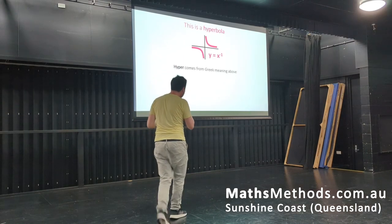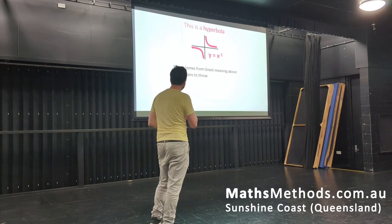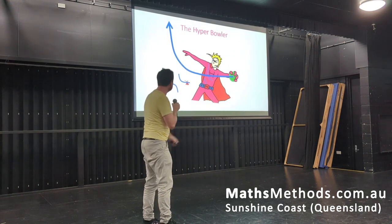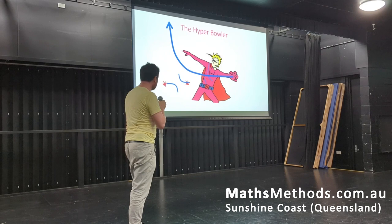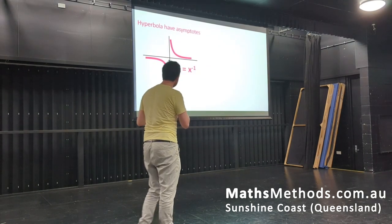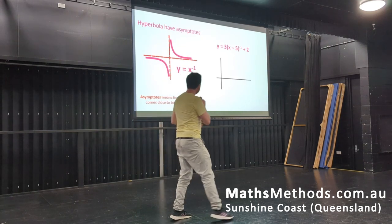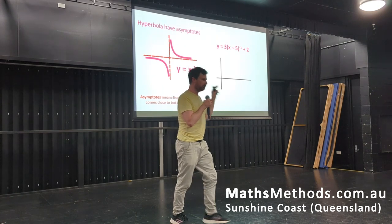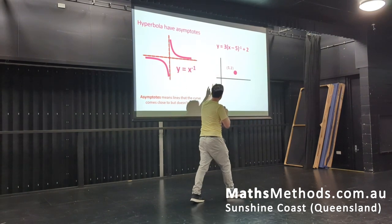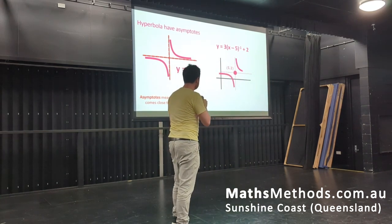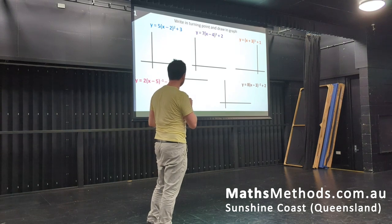When we look at the hyperbola — 'hyper' comes from a Greek word meaning above, and 'bola' means to throw, so it's a little bit like throwing above. Hyperbolas have asymptotes — basically lines that the curve comes close to but doesn't touch. When I'm sketching these, once I find what I call the turning point — it's not technically a turning point — say 5, 2 — what I like to do is just put in those asymptotes, one along there and one down there. Then it's much easier to sketch in the graph. Because it's negative 1, it's going to be this shape.